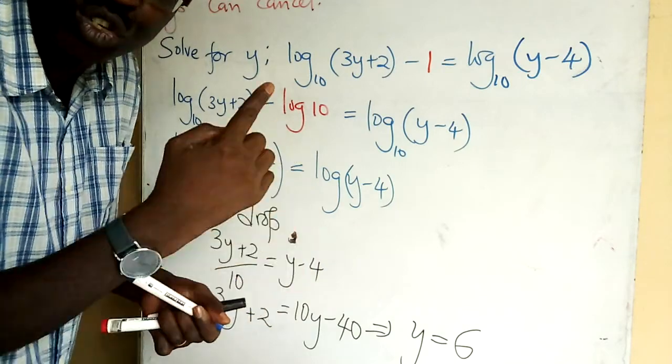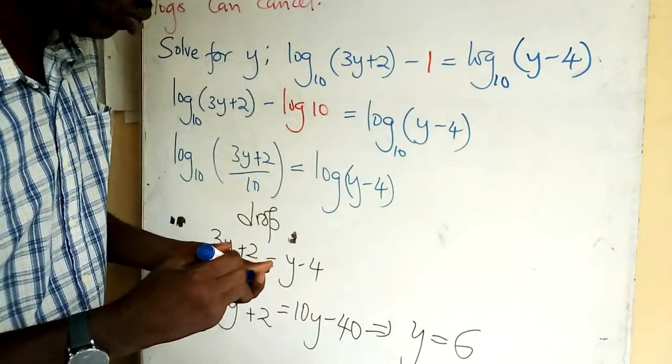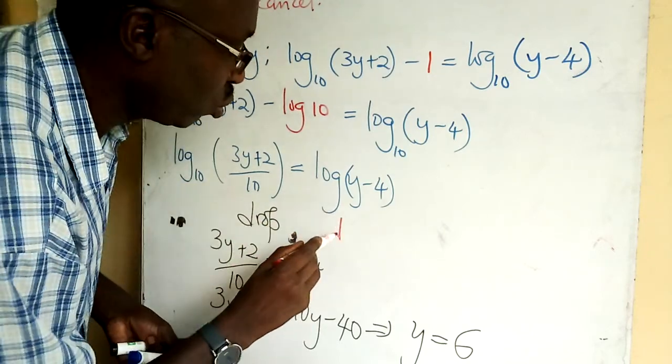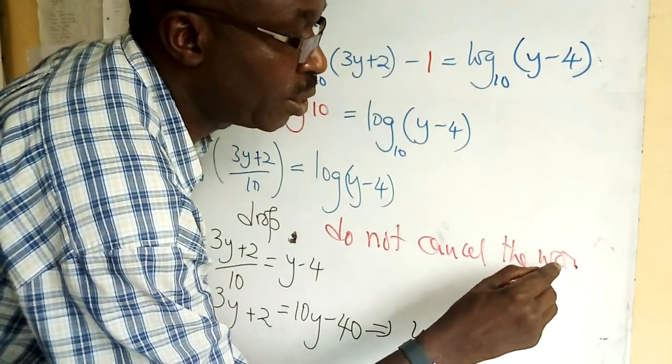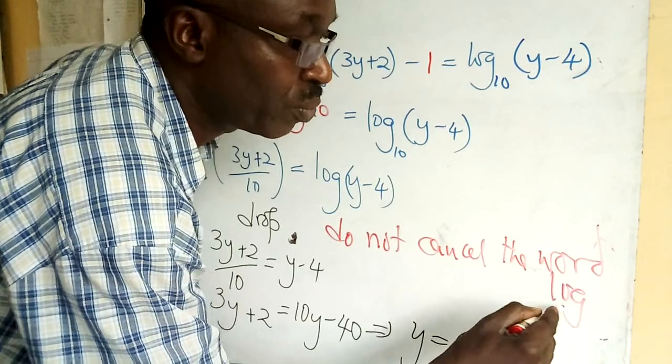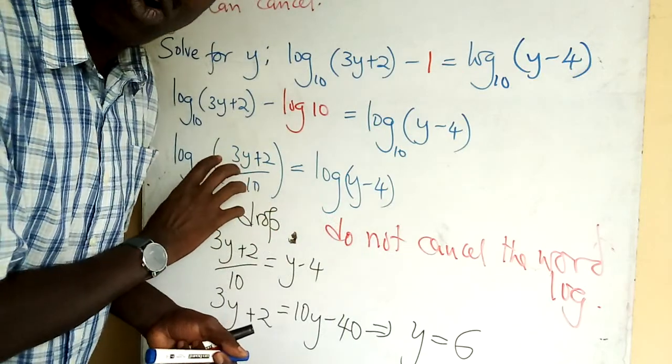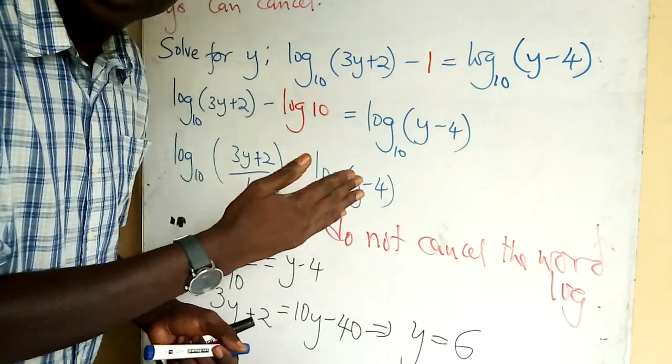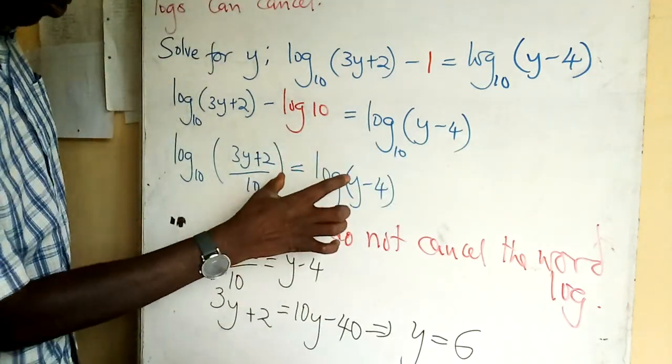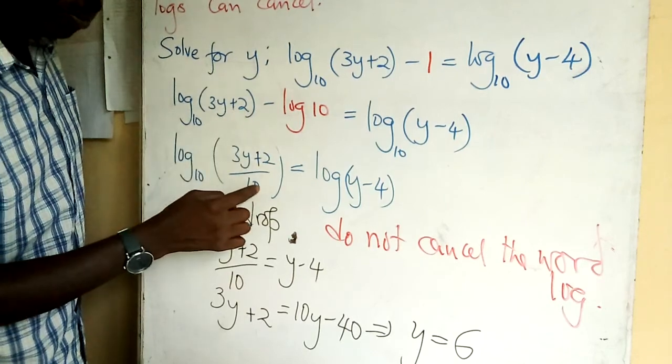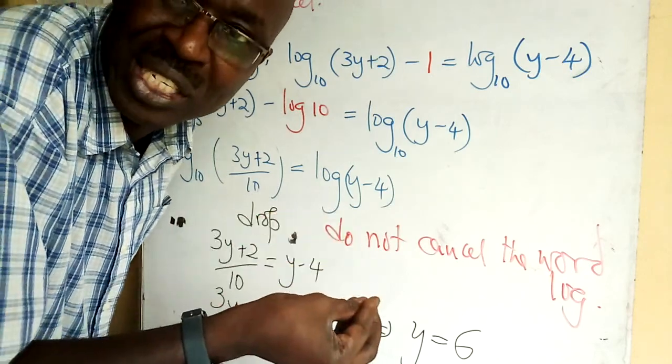It's not allowed in mathematics. We reason that if log of the right hand side equals log of the left hand side, then the numbers must be equal. That's why we drop. So this number must equal this number, but we don't cancel the word log because it's part and parcel of that number. We only handle the numbers. Then cross multiply. You get 3y + 2 equals